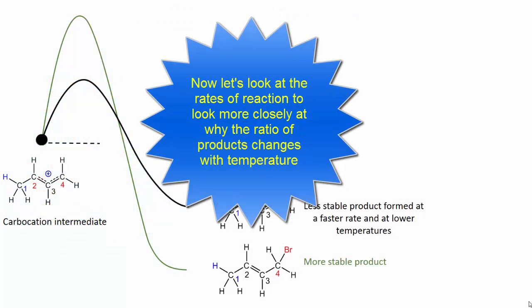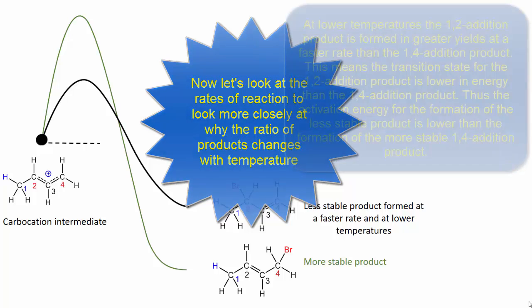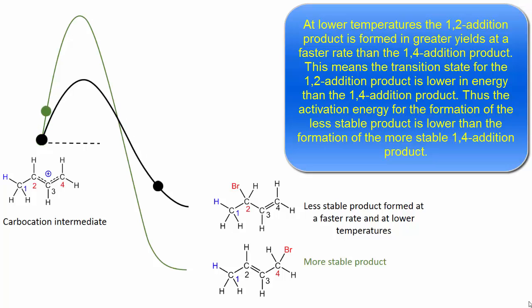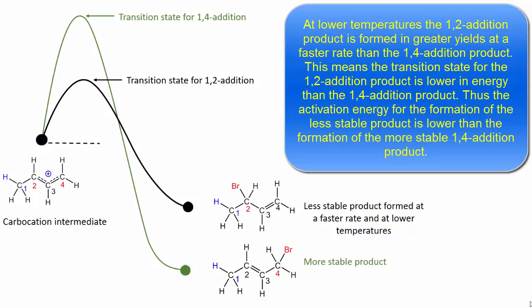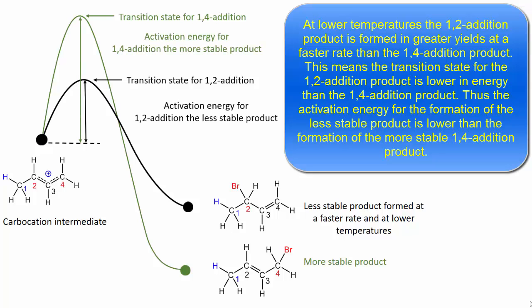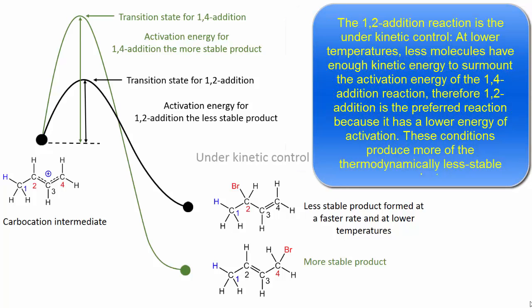Now let's look at the rates of reaction to examine more closely why the ratio of products changes with temperature. At lower temperatures, the 1,2-addition product is formed in greater yield and at a faster rate than the 1,4-addition product. This means the transition state for the 1,2-addition product is lower in energy than for the 1,4-addition product. Thus, the activation energy for the formation of the less stable product is lower than for the formation of the more stable 1,4-addition product. The 1,2-addition reaction is under kinetic control.